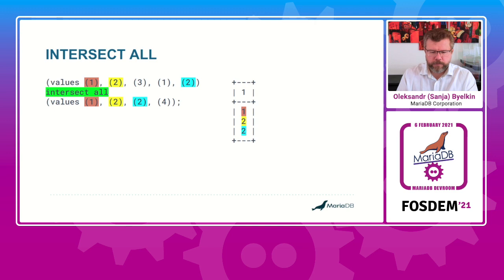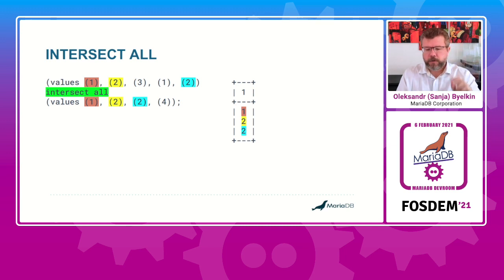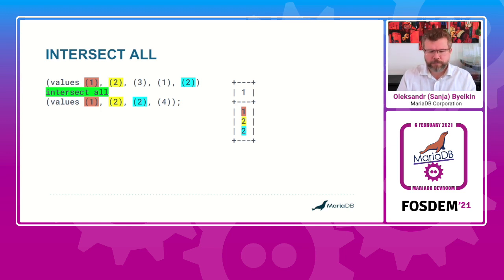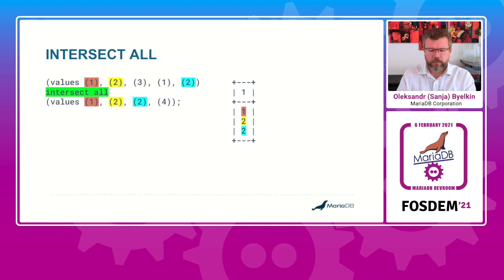Then, about INTERSECT ALL and EXCEPT ALL — it's a bit more complicated. To show it more clearly I used quite artificial examples, because everything I could invent was either huge or had a very bad database schema. I also used a table value constructor as the SELECTs, which makes the query self-descriptive so everything is in the query.